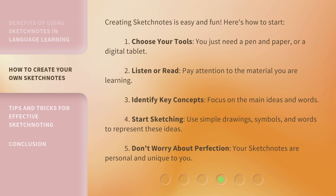Step 3: Identify key concepts — focus on the main ideas and words. Step 4: Start sketching — use simple drawings, symbols, and words to represent these ideas. Step 5: Don't worry about perfection — your sketch notes are personal and unique to you.